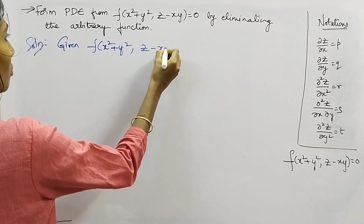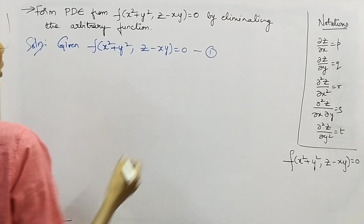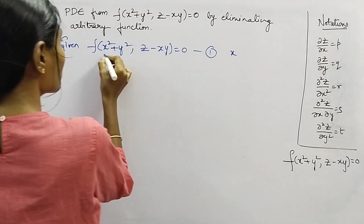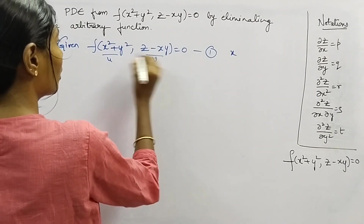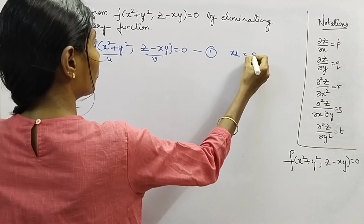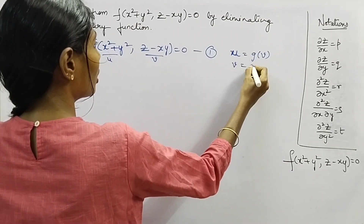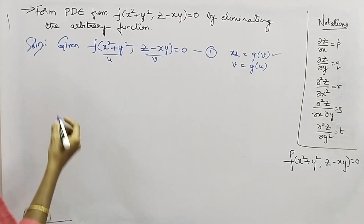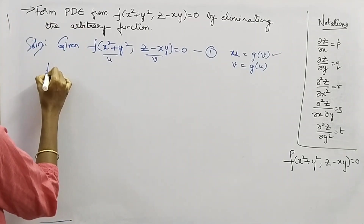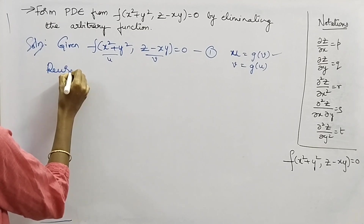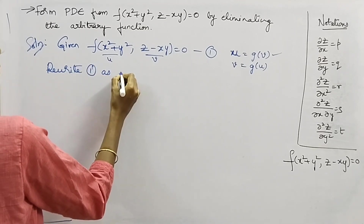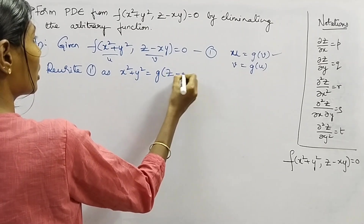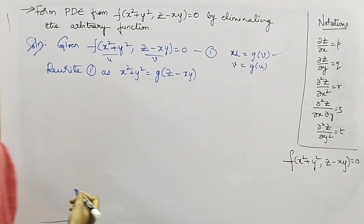Consider the given equation f(x² + y², z − xy) = 0 as equation number 1. Now we can rewrite the same equation by letting u = x² + y² and v = z − xy. We can write this as u = g(v). Rewriting equation 1: x² + y² = g(z − xy). Consider this as equation number 2.